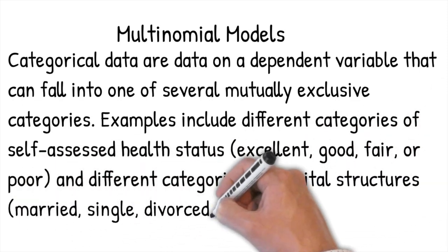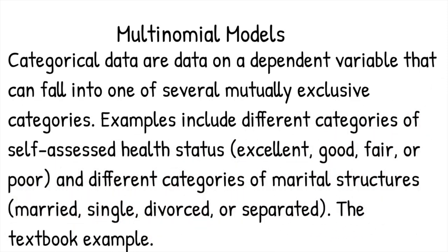Categorical data are data on a dependent variable that can fall into one of several mutually exclusive categories. Examples include different categories of self-assessed health status: excellent, good, fair or poor, and different categories of marital structures: married, single, divorced or separated.